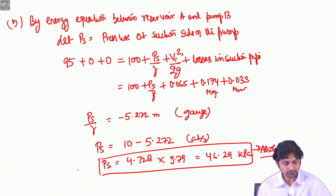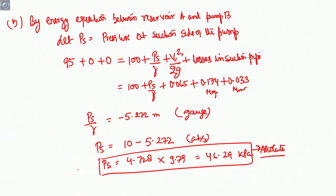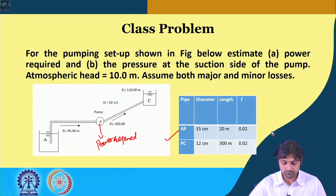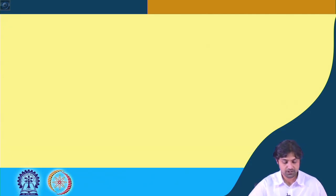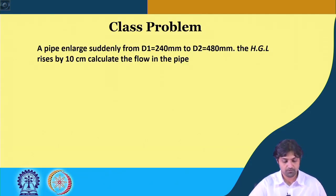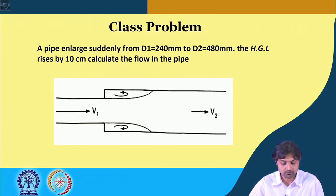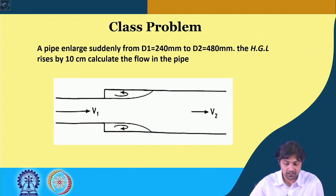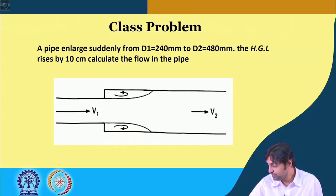So this is the value we have got. Both answers are found. We now proceed to solve one more problem: a pipe enlarges suddenly from D1 = 240 mm to D2 = 480 mm and the HGL rises by 10 centimeters. Calculate the flow in the pipe.